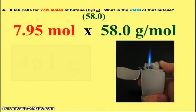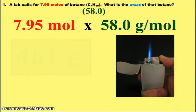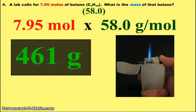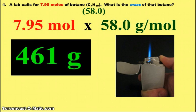Question four. A lab is calling for 7.95 moles of butane. Carbon is 12.0. Four of them makes 48. Each hydrogen is 1. So we add 10 and we get to 58.0 for the molar mass. So the mass of the butane, we take the moles times the molar mass, and we get 461 grams. And yes, butane is a form of gas that can be found in lighters. Not that you'd ever need one.